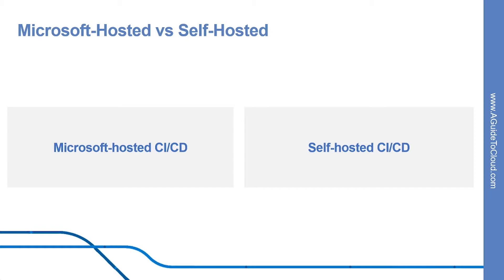Microsoft provides a free tier of service by default in every organization. For a public project, 10 free self-hosted parallel jobs are free. For a private project, one self-hosted parallel job is included. Additionally, for every active Visual Studio Enterprise subscriber who is a member of your organization, you get one additional self-hosted parallel job. When the free tier is no longer sufficient, you can contact Microsoft for free tier limit increases. There is no time limit on self-hosted jobs.